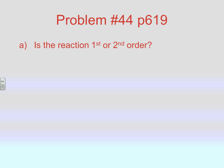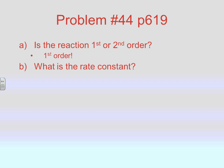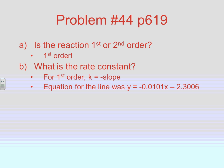Now that we know it's first order, the second part asks for the rate constant. The rate constant comes from the slope of that graph. For a first order process, the negative of the slope equals k. Looking at the equation for the line — y equals mx plus b — our slope is negative 0.0101. Multiplying by negative 1 gives us our k value. Since our original numbers have three significant digits, we keep that precision.